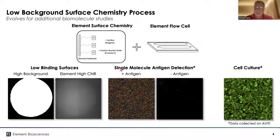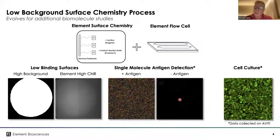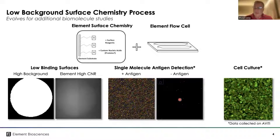Very interestingly, these other images shown here for single molecule antigen detection as well as cell detection were also captured on the sequencer — both with the optical system as well as with the surface chemistry — showing very extendable use possibilities. This is not to suggest the platform was designed specifically as anything other than a DNA sequencer. What we're really showing is that the surface chemistry and optical system have quite a bit of opportunity for additional use in the future, and that Element is very committed to opening up biology to many different investigations.